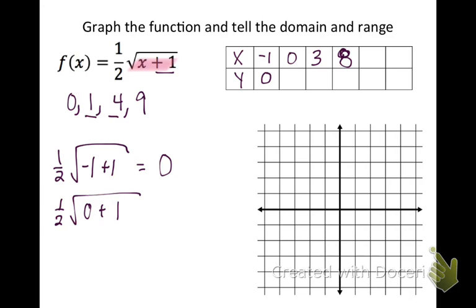Plugging in 3, the square root of 3 plus 1 is 2. 2 times 1 half gives me 1. And then if I plug in 8, the square root of 8 plus 1 is 3 times a half is 3 halves.